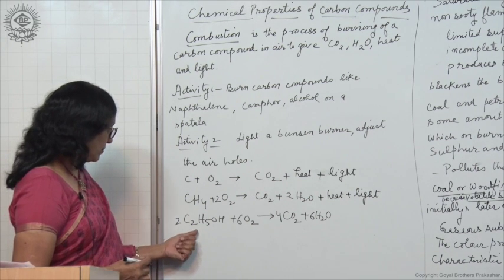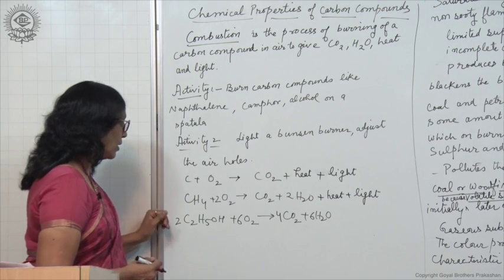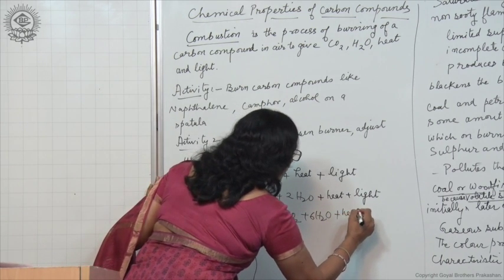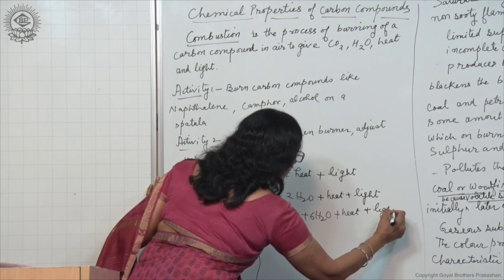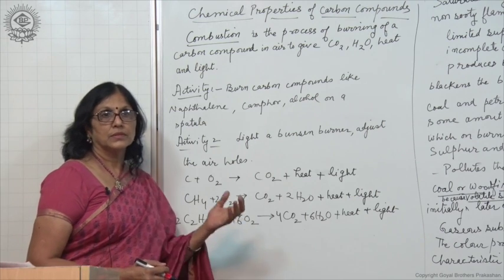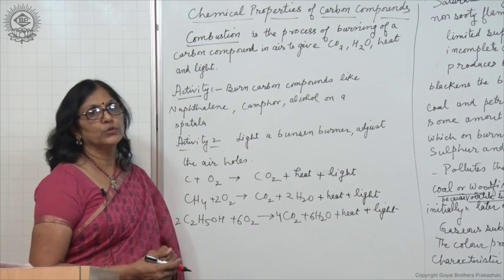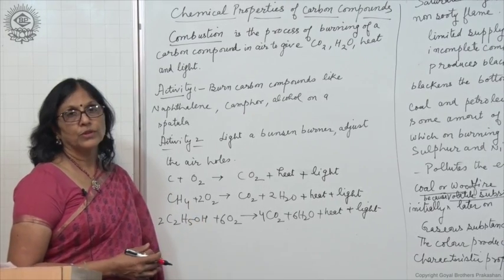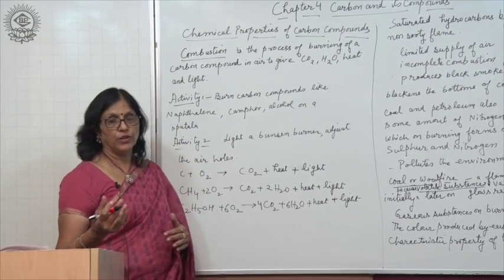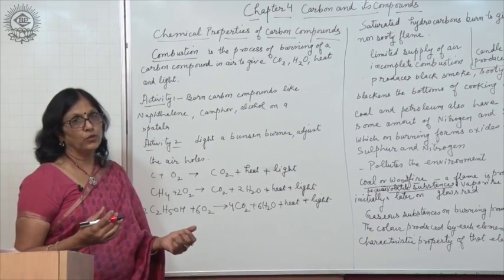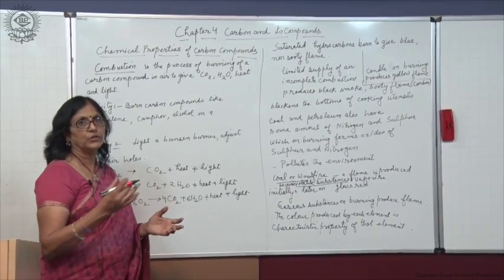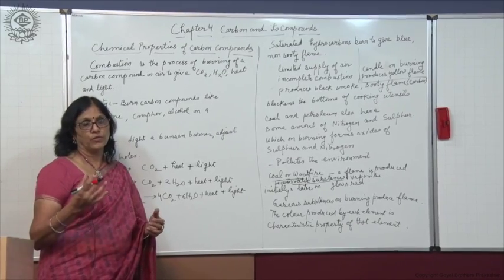you already know the IUPAC name of this alcohol. Ethanol burns in air and forms carbon dioxide, water, heat and light. Now, some compounds on burning produce a blue flame and some compounds on burning produce a yellow flame. Let us see what type of compounds produce a blue flame and what type produce a yellow, sooty flame.